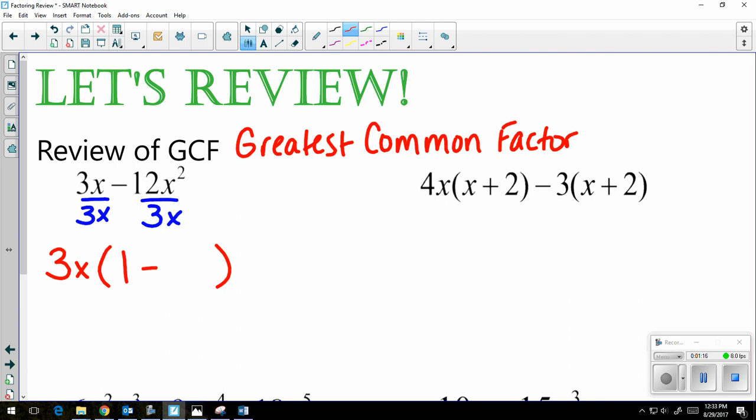I'm going to bring down my minus sign. 12 divided by 3 gives me 4, and x squared divided by x gives me x. So here is the factored form, 3x times 1 minus 4x.